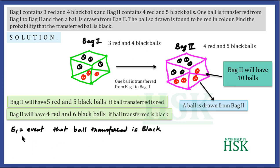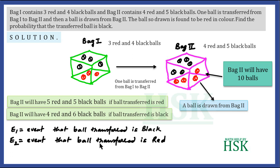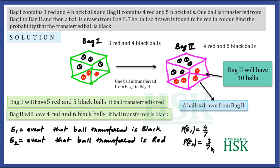Now we consider two events. E1 is the event that the ball transferred is black, and E2 is the event that the ball transferred is red. Since Bag 1 has 3 red and 4 black balls, the probability of E1 — that is, the ball transferred is black — is equal to 4 upon 7, which is favorable ways upon total ways. And probability of E2 is equal to 3 upon 7.